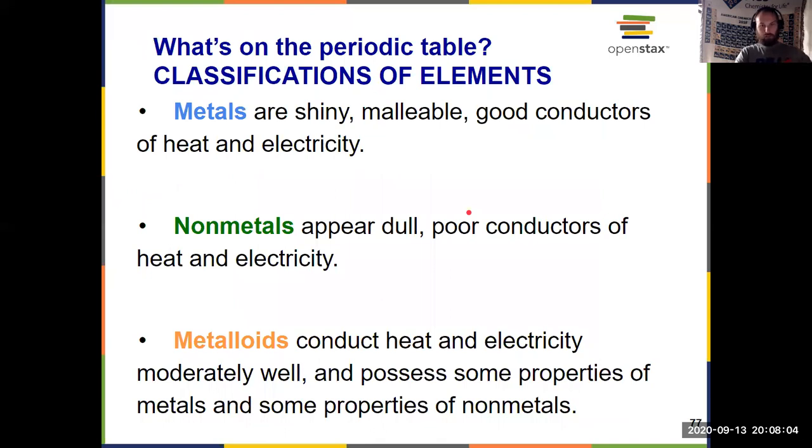So what other information does the periodic table give us? We can loosely group things into three classifications of elements because they have big differences in properties. On the left-hand side and the bottom of the periodic table, we have metals, which are characterized by being shiny, malleable, which means they're soft, you can contort them, good conductors of heat and electricity. Non-metals are dull, poor conductors of heat and electricity, and they're oftentimes gaseous as well as being solid.